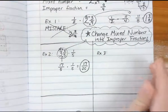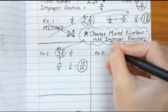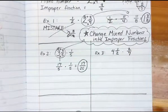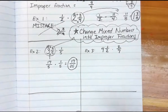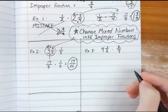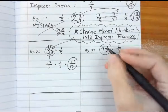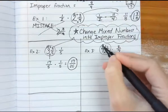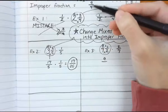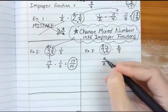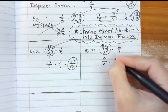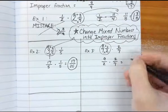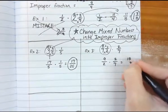Example number three: four and one-half times two-sevenths. Pause the video if you want to try this one on your own. Identify the mixed number — using multiply and add: two times four is eight, plus one is nine, so nine-halves. Bring down two-sevenths since it's already a fraction. Multiply straight across: nine times two is eighteen, two times seven is fourteen.